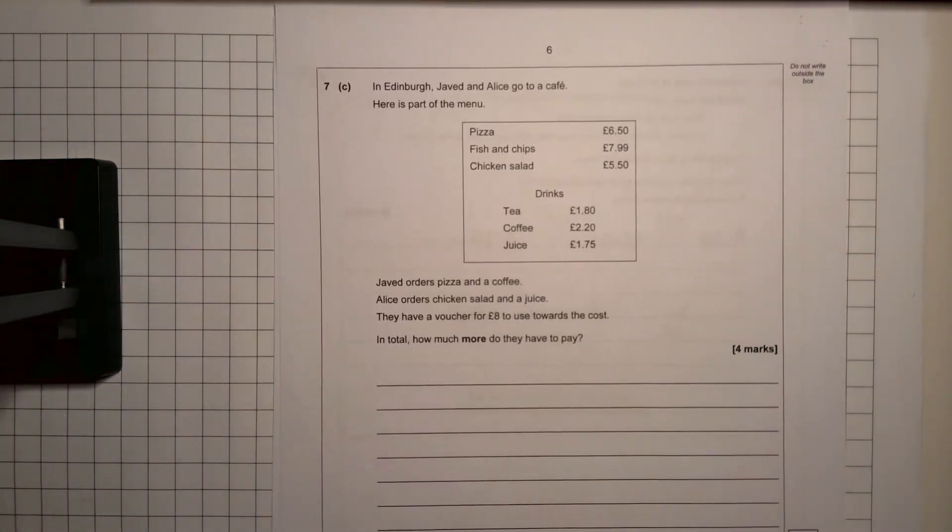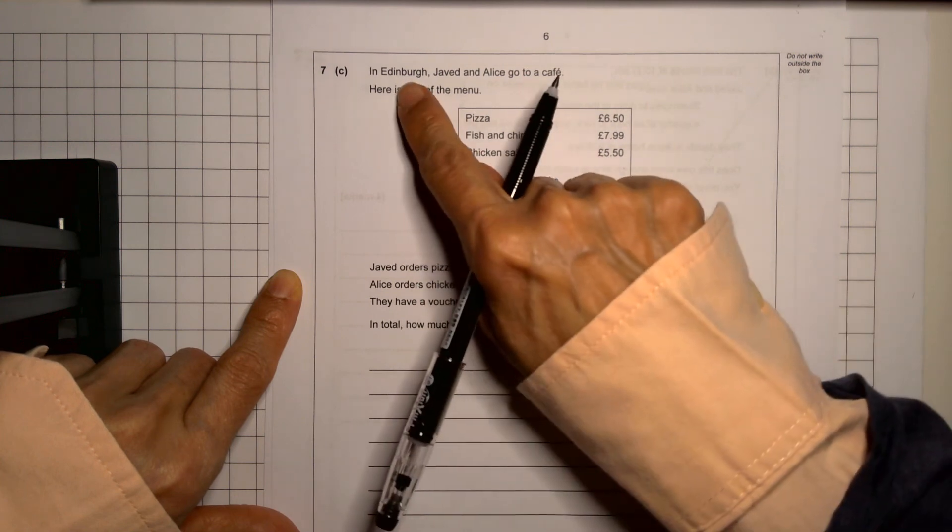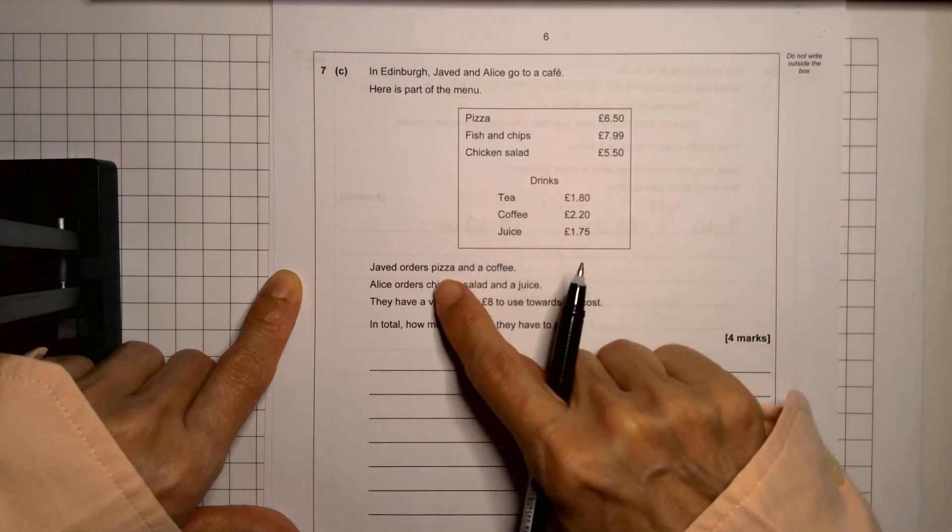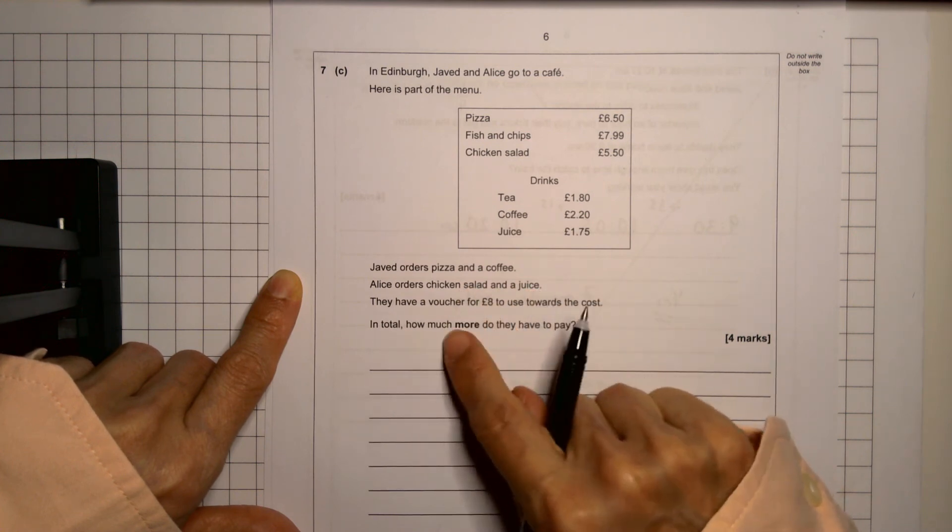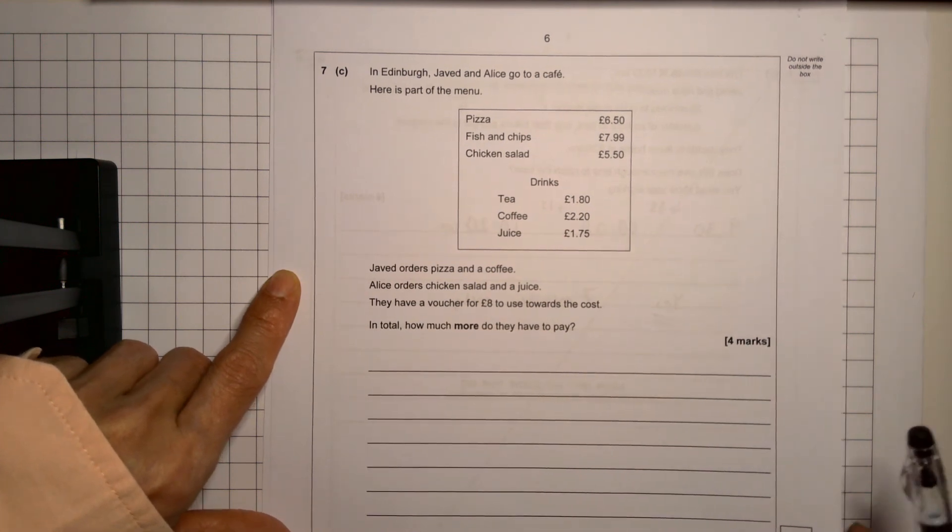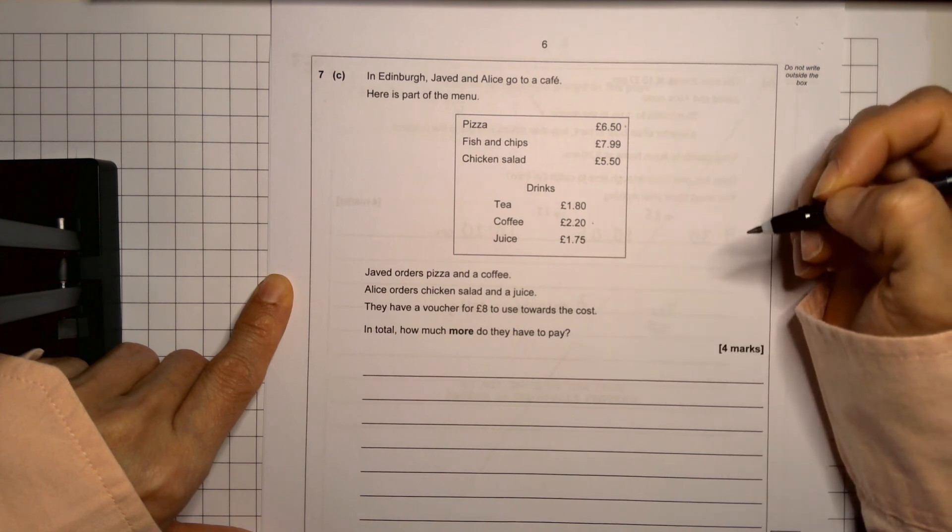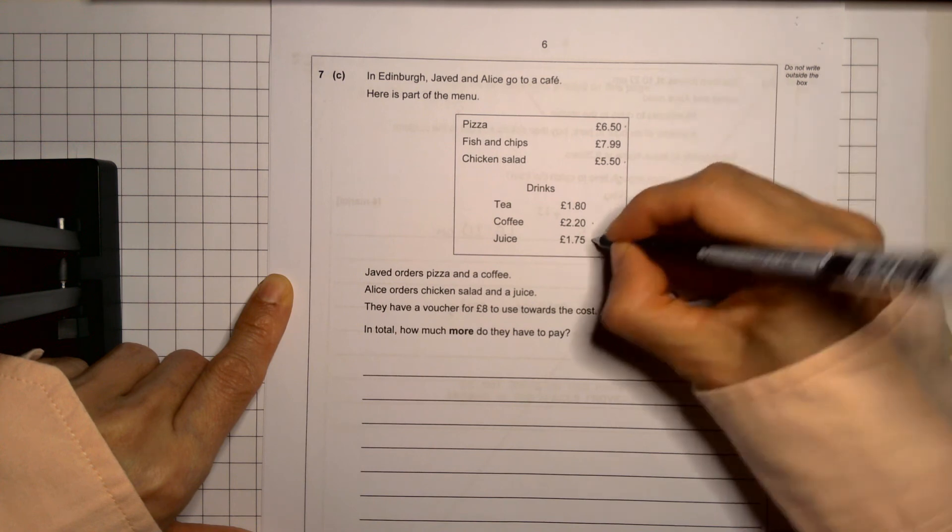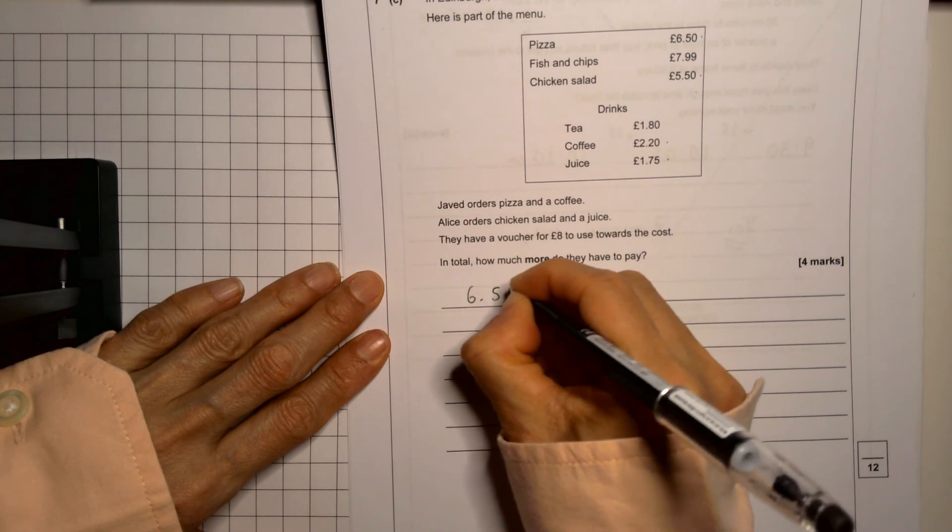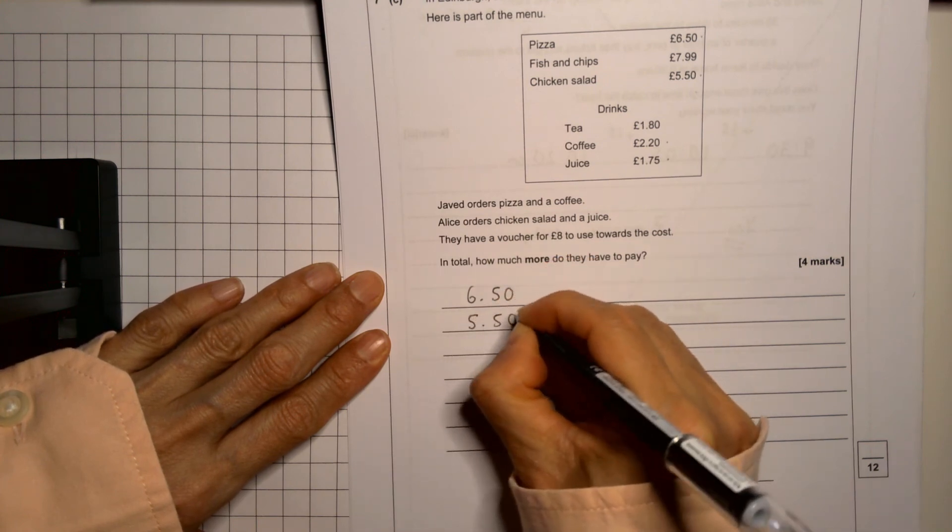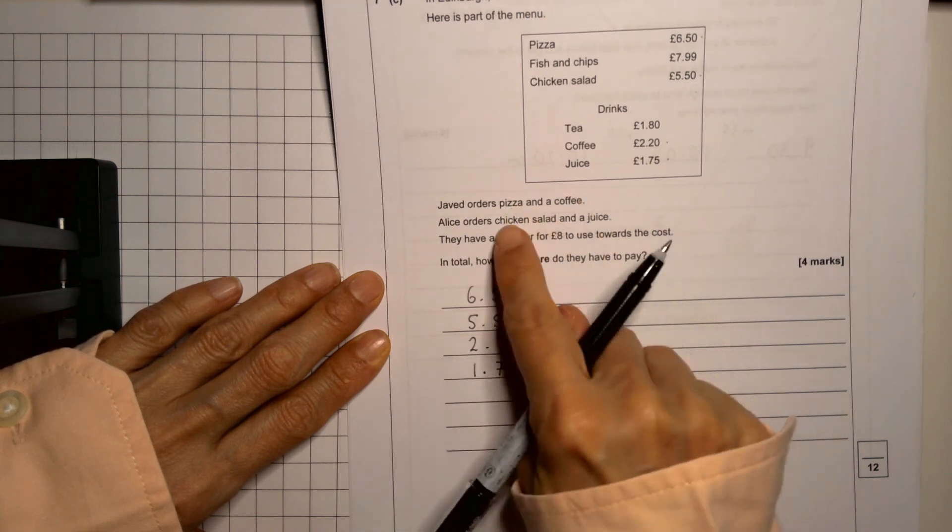Seven C, the last one of this one. Four marks. There's some information about the cost of some food, pizza, fish, chicken and some drinks. They tell us that when in Edinburgh, Jared and Alice go to the cafe, here's the menu. They order a pizza and a coffee and she orders a chicken and a juice. They have a voucher for eight pounds towards the cost. And in total, how much more do they have to pay? So we're going to find the total cost. And then after that, we're going to work out how much more they need to pay. So he bought a pizza and he bought a coffee. We need to add those together. She also bought a chicken and a juice. We're going to add those all together. So we know there's a pizza, a chicken, a coffee, and a juice. Four things written. We're going to add them together. Make sure you have your decimal dots in there aligned.